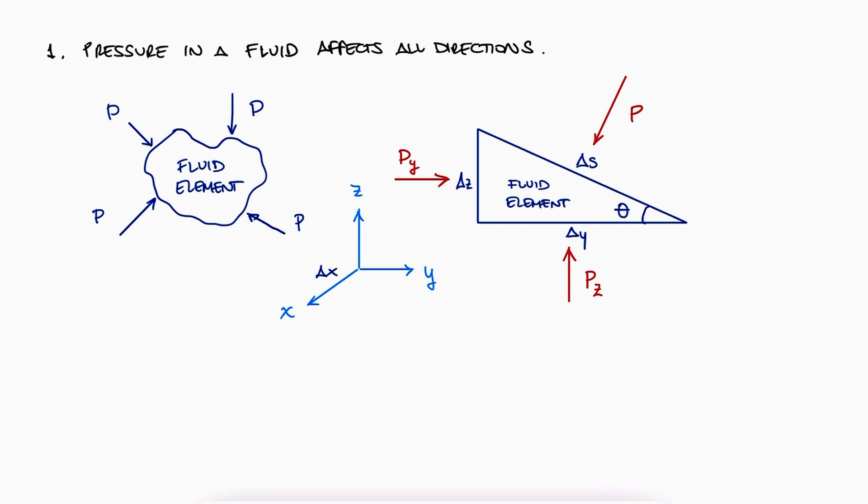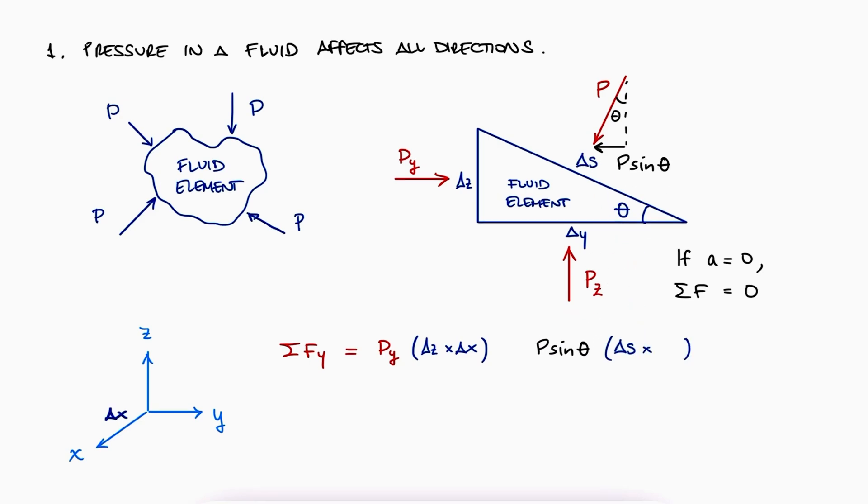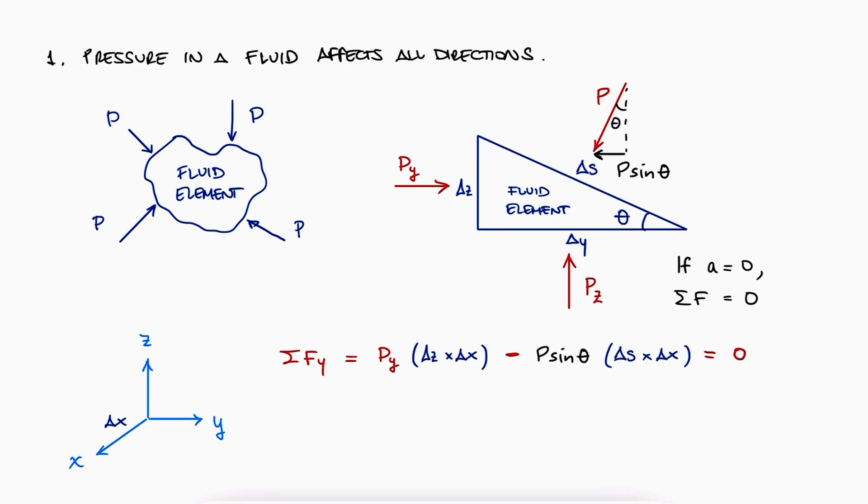Assuming that the fluid is not accelerating in any direction, the sum of forces should be zero. So, for example, if we do sum of forces in y, we would see PY going right times the area on the left, which is delta z times delta x, and then the component of P, that is, P times sine of theta, times the area delta s times delta x going left. And of course, this should be equal to zero, again, since the fluid is not accelerating in the y direction. Since delta z can be written as the component of delta s, or delta s sine of theta, we see that PY has to be equal to P.